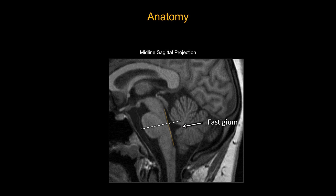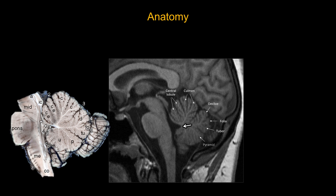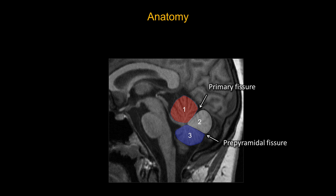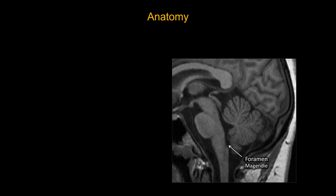That orientation is quite important. The vermis is comprised of different lobules; for our purposes we don't need to know the exact names, but you should recognize two prominent fissures: the primary fissure and the prepyramidal fissure just posterior to the pyramid. Using these two fissures you can divide the vermis roughly into three sections, which should be roughly equal in size. If the inferior section is much smaller than the second section, you are looking at inferior vermian hypoplasia.